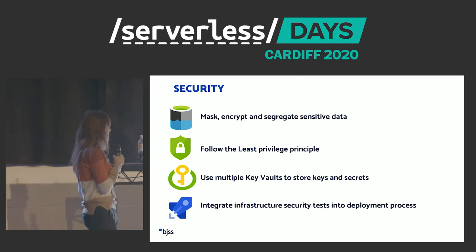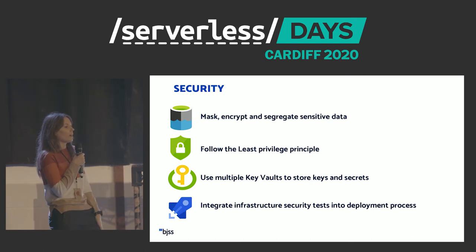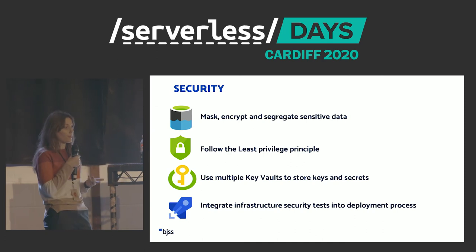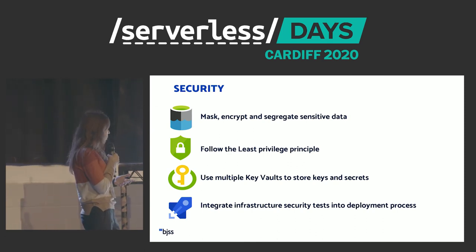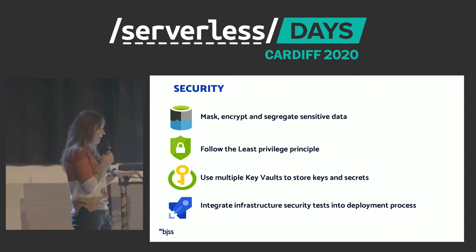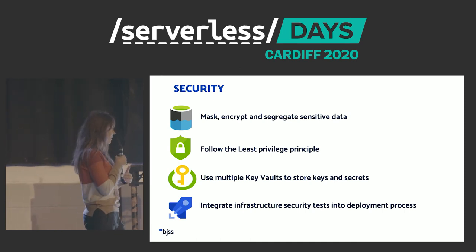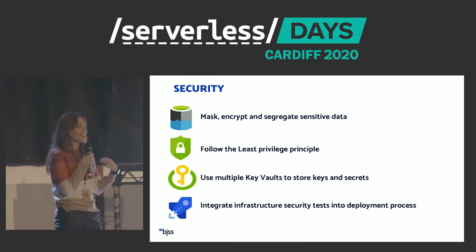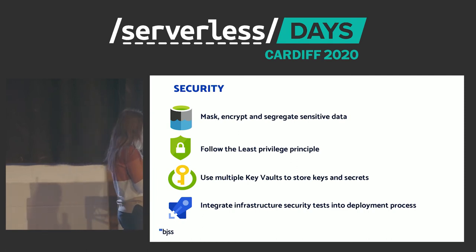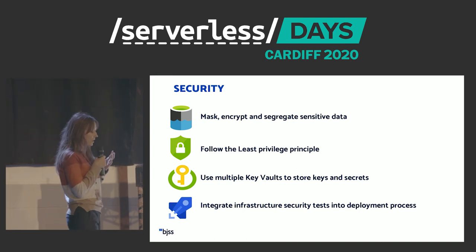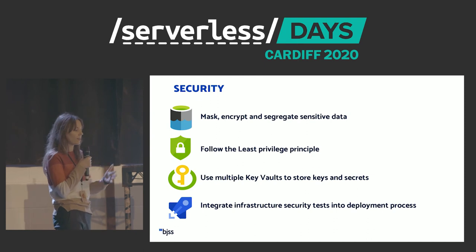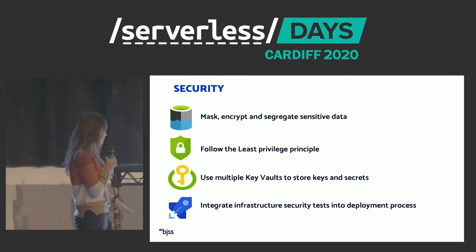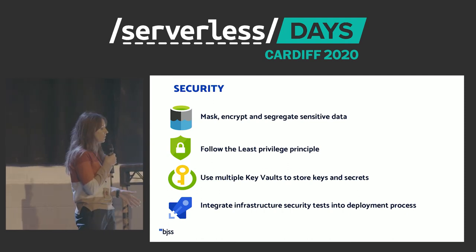Security: we worked in a highly regulated industry where sensitive data was flowing through the system at all times. We had to mask, encrypt, and segregate all sensitive data — PII and PCI data. We made sure everything in production where PII and PCI data flowed was isolated from external connectivity, and that interaction between services only exposed the information needed to connect and talk to each other. We also used multiple key vaults to store keys and secrets — we didn't want a security bottleneck from a single key vault — and integrated infrastructure security tests into our deployment process.